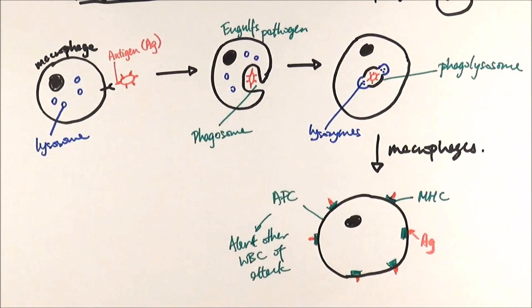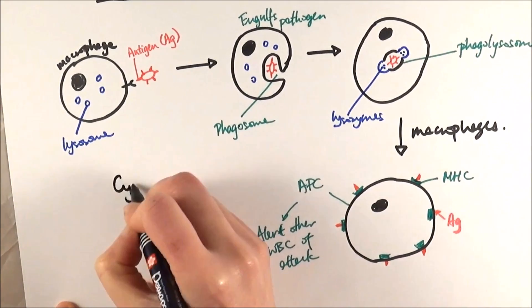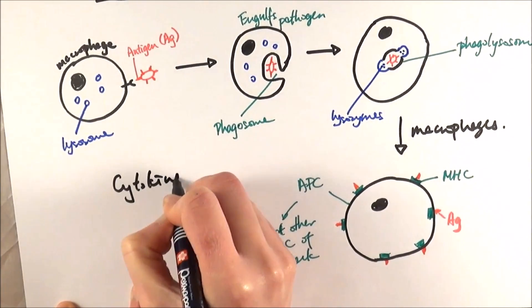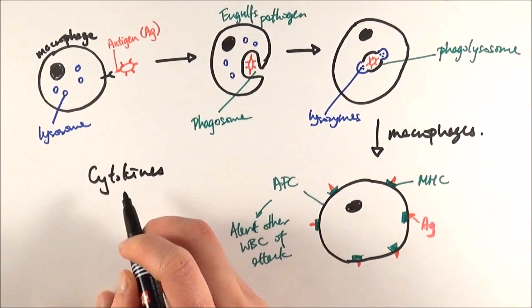In this particular process as well, they can release some chemicals that are useful. For example, cytokines, which is used for cell signalling to alert other cells as well.